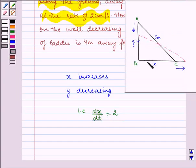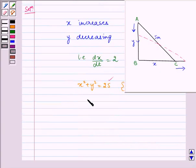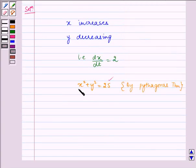Now let us consider triangle ABC. By Pythagoras theorem, we can write x² + y² = 25. When x equals 4, we get 16 + y² = 25.